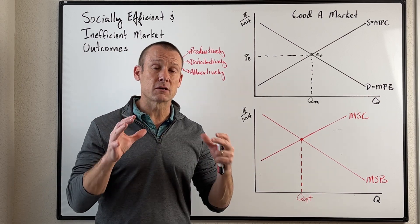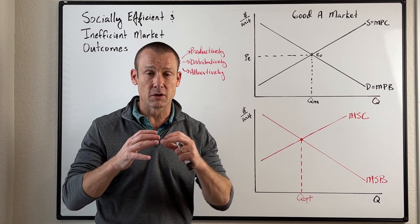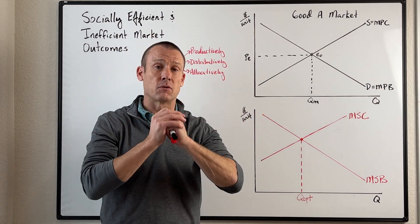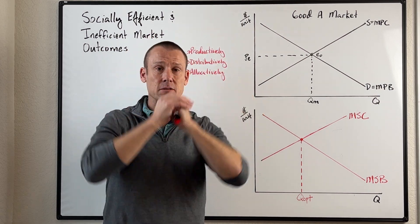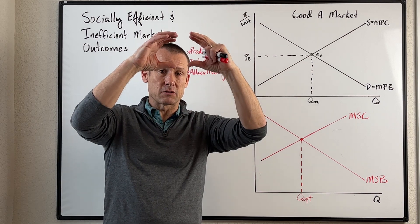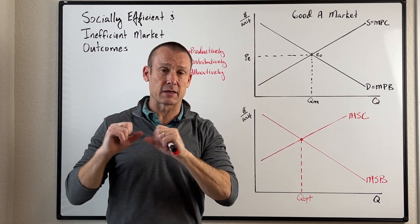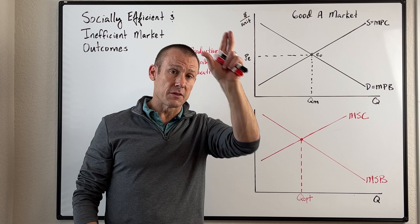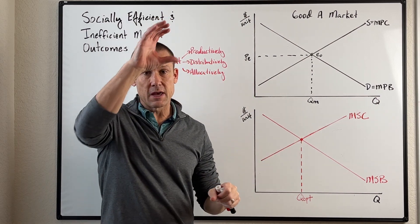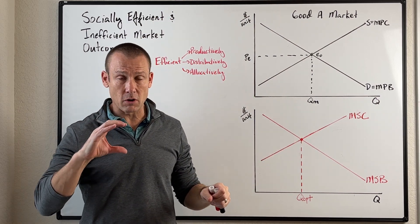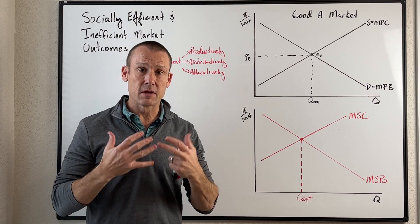To really understand this series of videos, we've got to go up to a pretty high level. We've got to talk about economic systems. To an economist, there are two general economic systems: centrally planned economic systems, and market-based, where we have markets at the base.